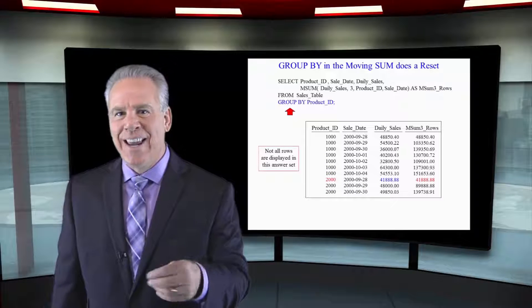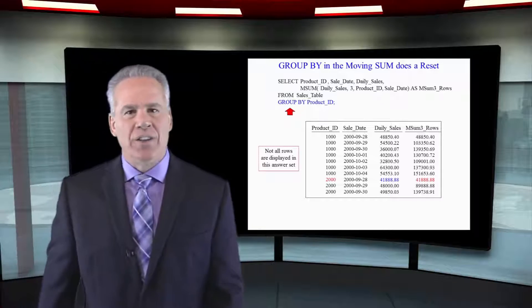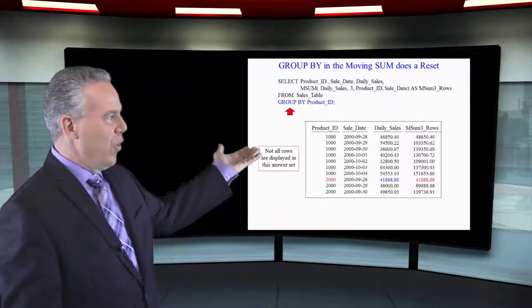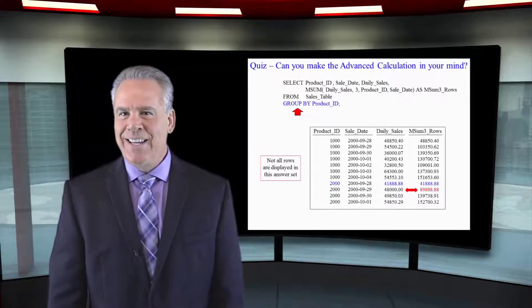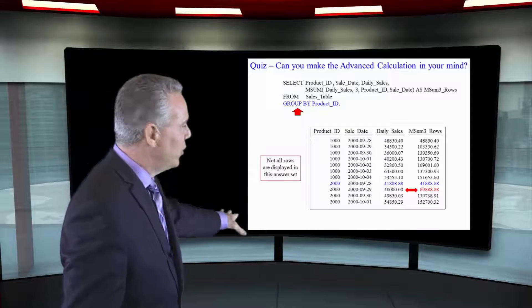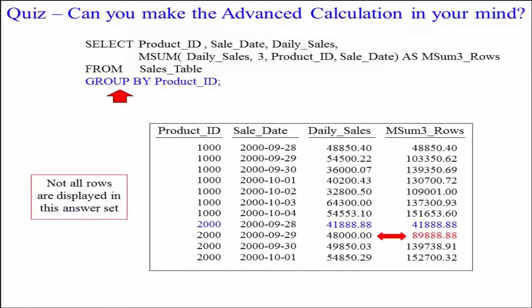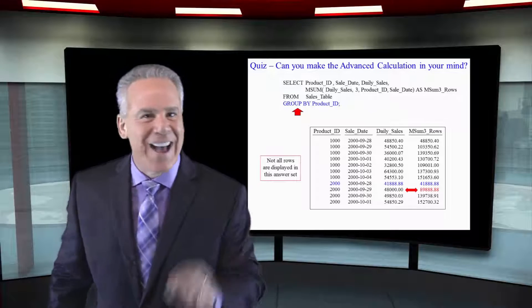Since this is a Teradata syntax ordered analytic mSum, we can use the group by product ID. What does it do? It resets the calculations and starts again when we move from product ID 1,000 to 2,000. As soon as there's a 1,000 to 2,000 product ID break, we immediately start again. Row one for product ID 2,000 shows $41,888 as the new moving sum. Row two adds $48,000, and we continue adding until the third row, then it's current row plus previous two all the way down until we get to product ID 3,000, where it resets again.